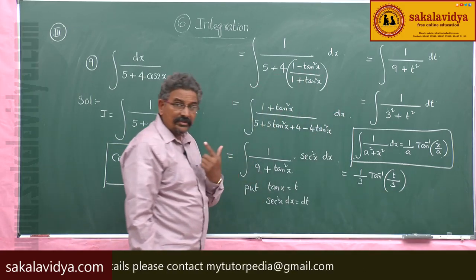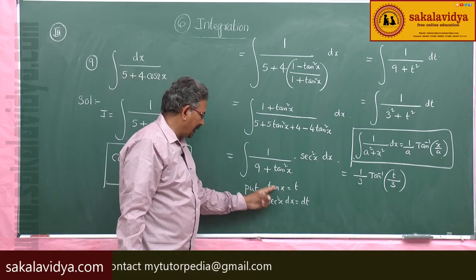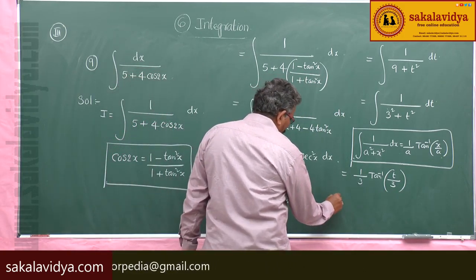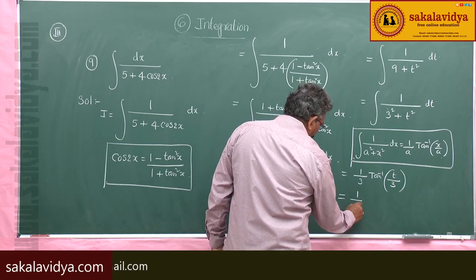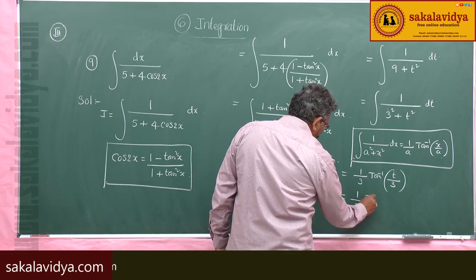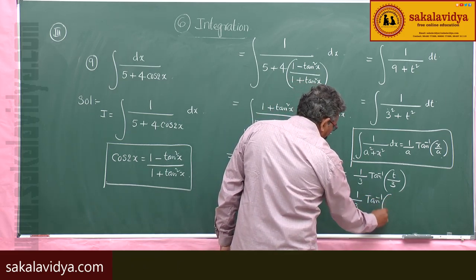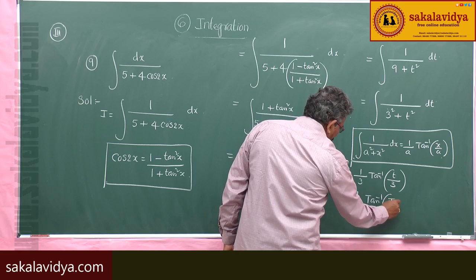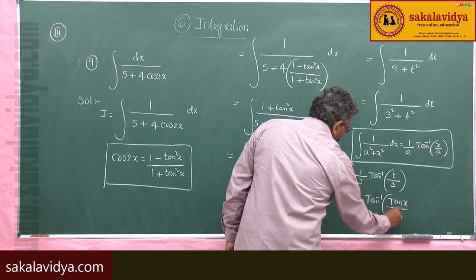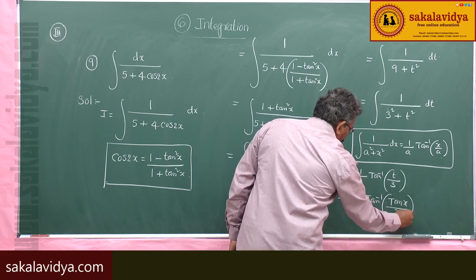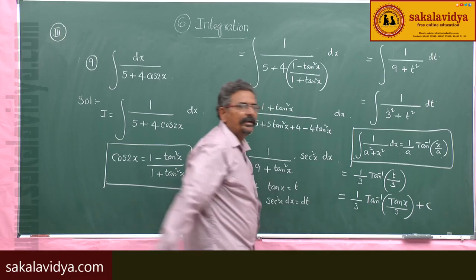Since t = tan x, the final answer is (1/3) tan⁻¹(tan x / 3) + C, where C is the constant of integration.